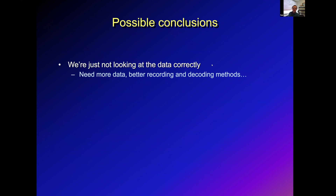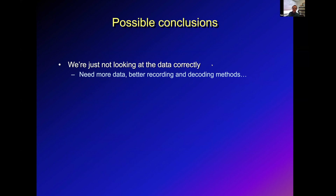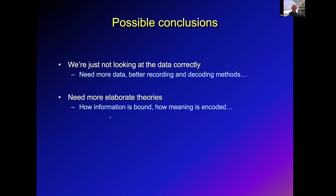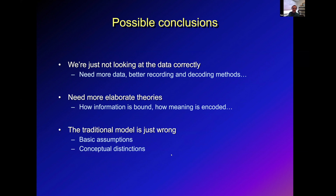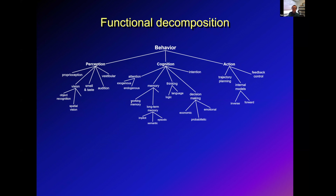Possible conclusions are that maybe we're not looking at the data correctly, maybe we need more data, better recording and decoding methods, or more elaborate theories explaining how information is bound together and how meaning is encoded. But another possibility worth considering is that the traditional model is just wrong — not completely wrong, but it makes mistakes in some basic assumptions and conceptual distinctions. In other words, perhaps this is not the right way to break down the problem of behavior.